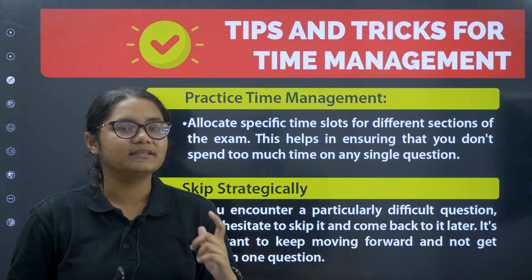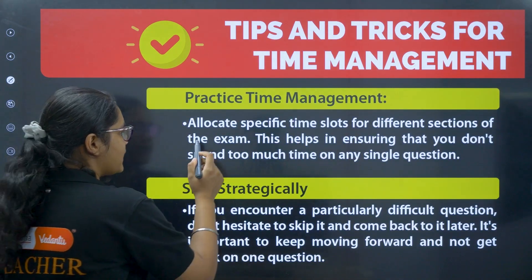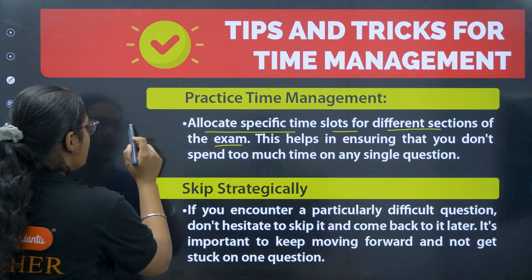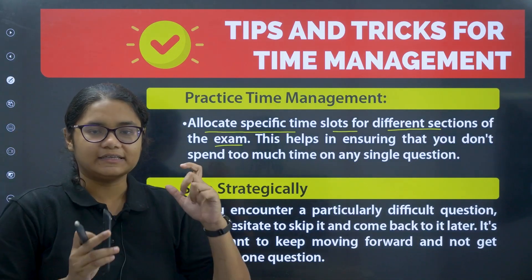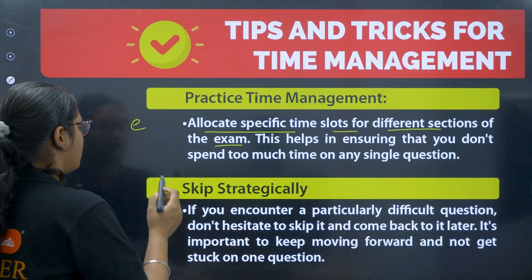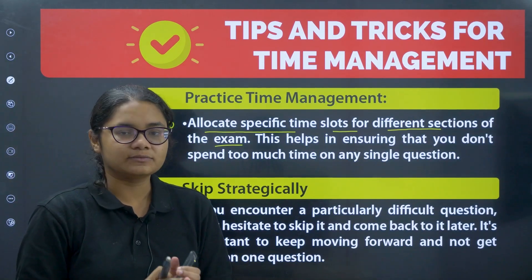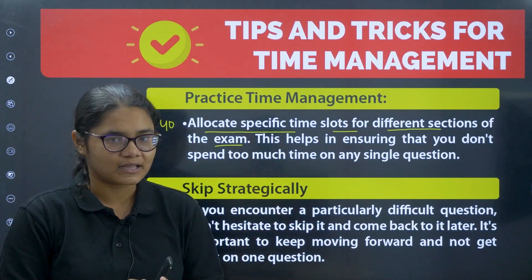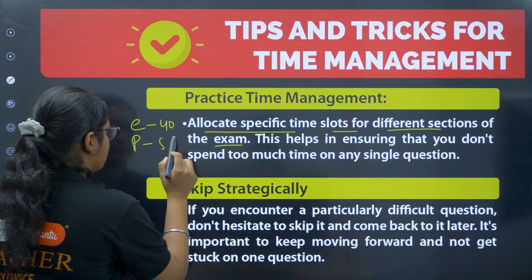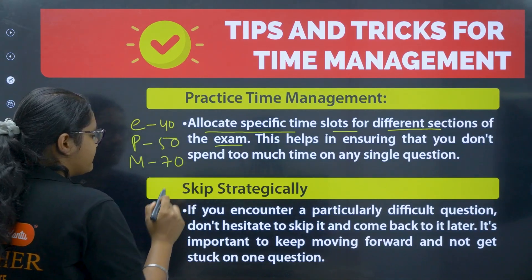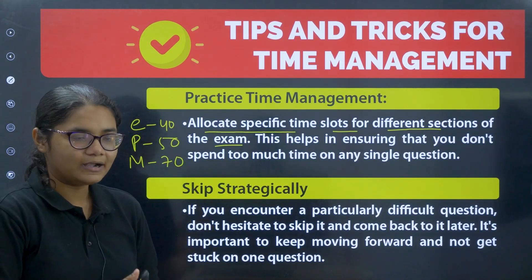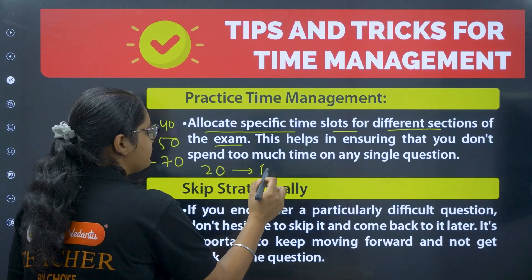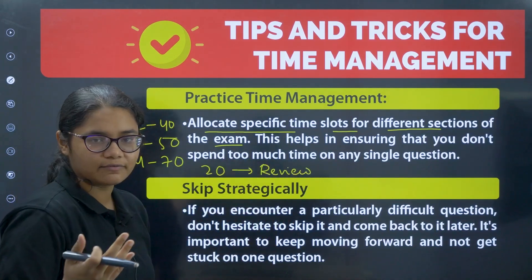Tip one: allocate specific time slots for different sections. Start with Chemistry because it is easy and scoring — allocate around 40 minutes to solve 60 questions, as most don't require a full minute. For Physics, give around 50 minutes, and for Maths give around 70 minutes because it involves a lot of calculations.